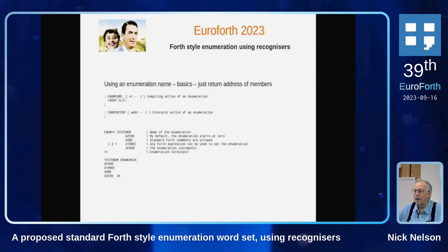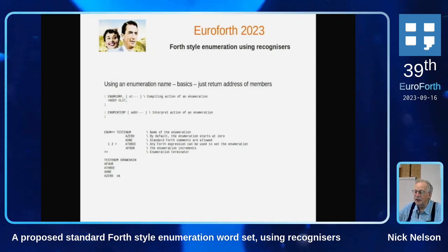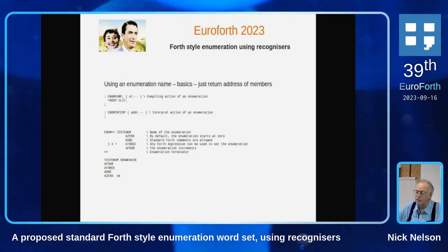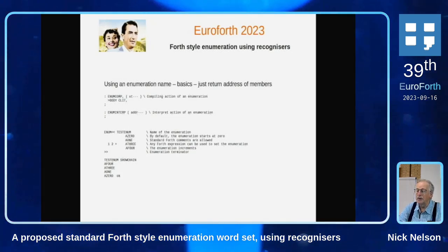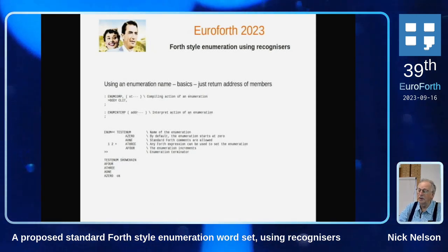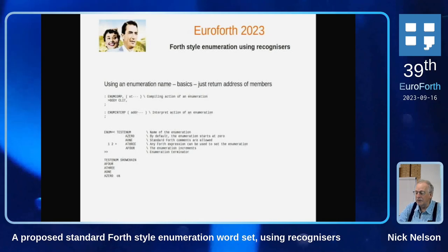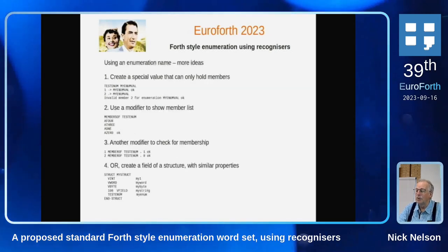Just as with the enumeration itself, the members also have the possibility of different compilation and interpret actions, just in case we need to add complexity later — and at the moment they do nothing. But you can see that you can use show-chain on the list to tell you what the members of the enumeration are, which is really quite useful. That was the initial arrangement, the simplest possible one. But of course you have the possibility of doing other more useful things.